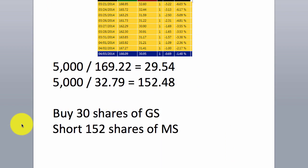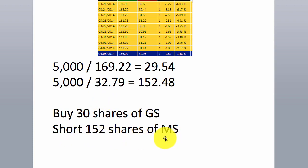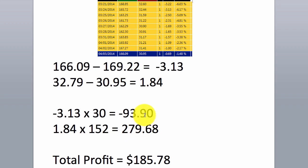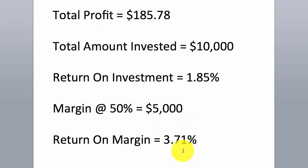Assuming a position size of $5,000 per leg, divide $5,000 by the long price and divide $5,000 by the short price, rounding to the nearest whole number. We'd buy 30 shares of Goldman Sachs and short 152 shares of Morgan Stanley, with each position size at $5,000. We lost 3.13 points on the long side and made 1.84 points on the short side. Because we had many more shares on the short side, we ended up making a profit overall. Total amount invested was $10,000, ROI was 1.85%, or ROI on margin was 3.71%.